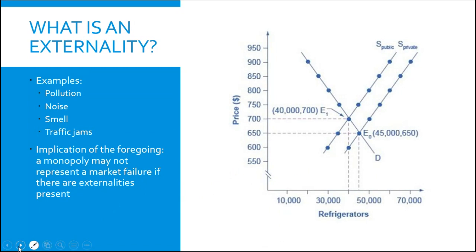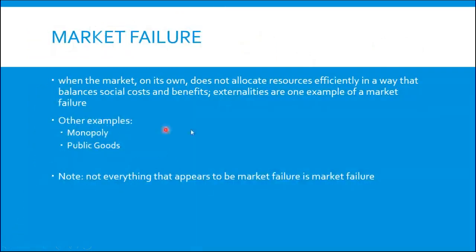Another implication is that if there is a difference between public costs and private costs, it represents a market opportunity. That's largely what drives exchange — differences in valuation, differences in costs and benefits. Somebody who can close this gap between the private and the public could stand to make a lot of money. So when a market by itself does not allocate resources efficiently, we say there is a market failure. Externalities are one such example of market failure. Other examples could be a monopoly, although not necessarily, and also public goods.